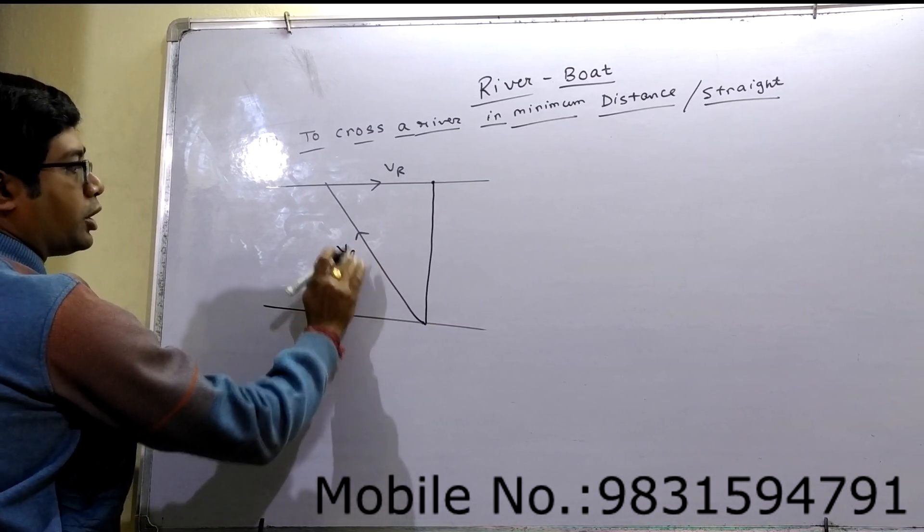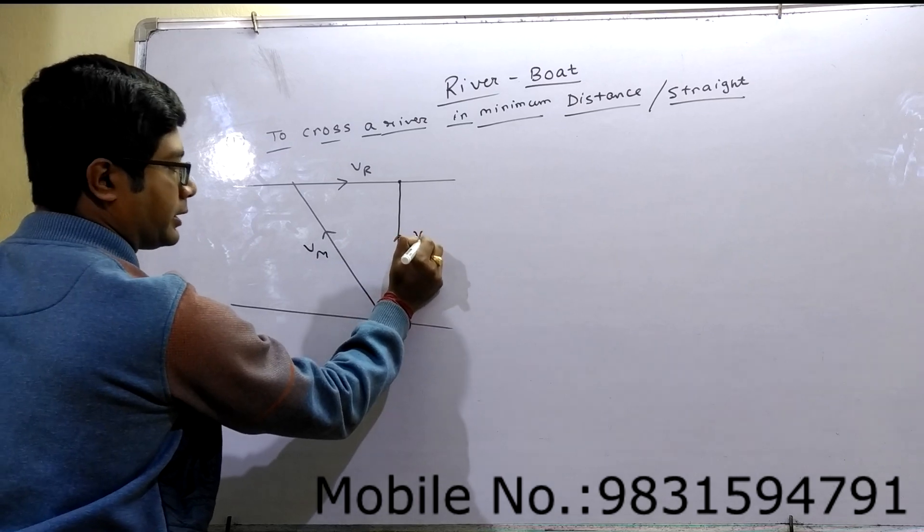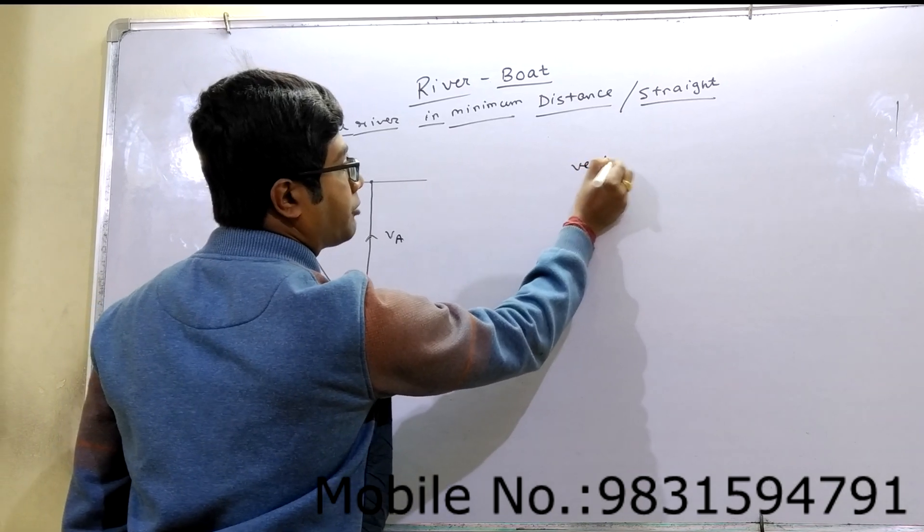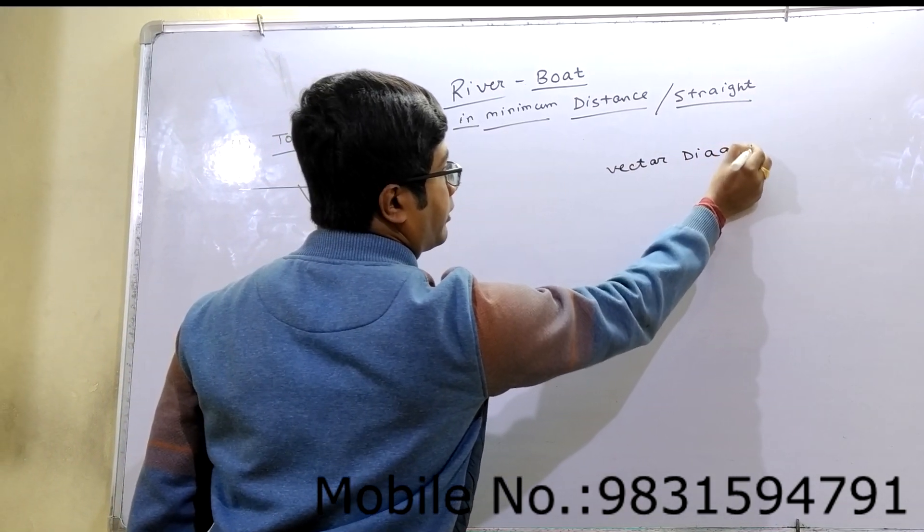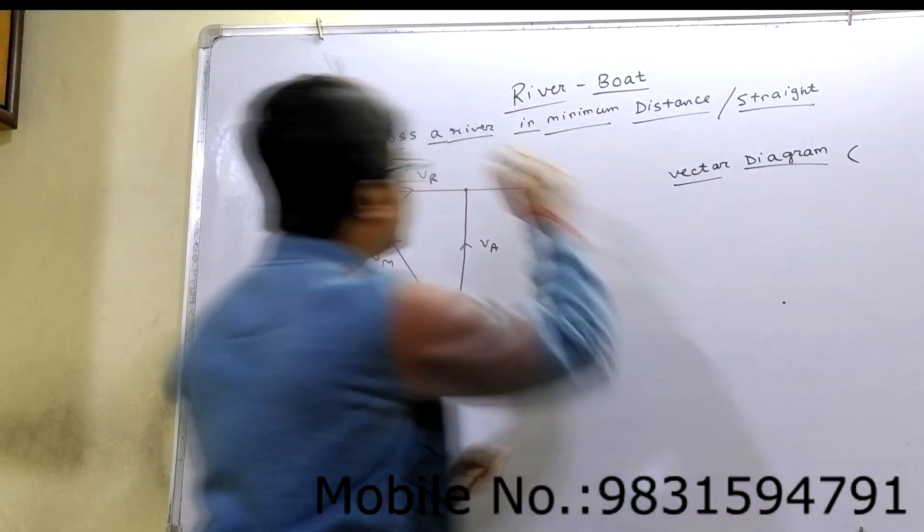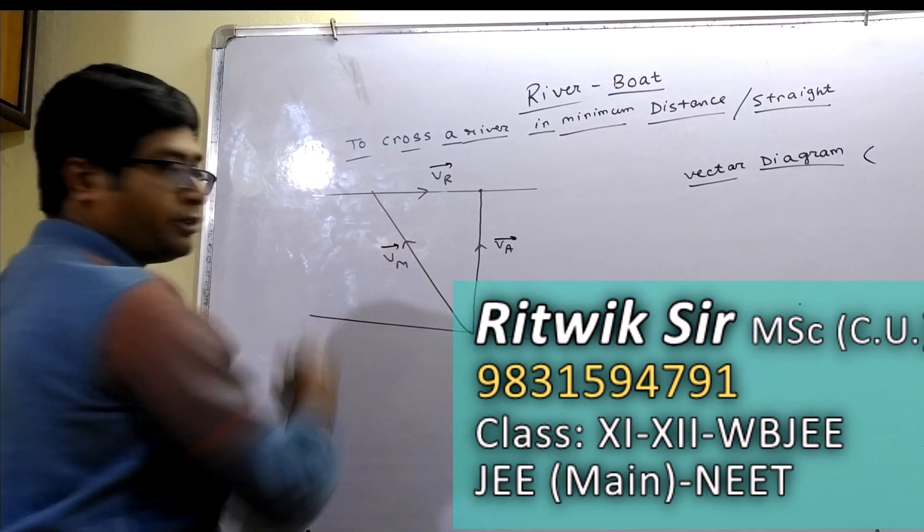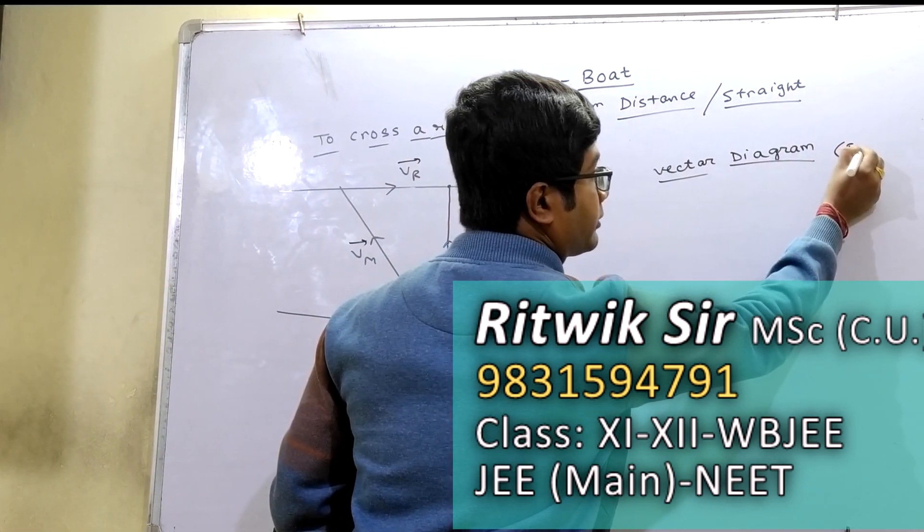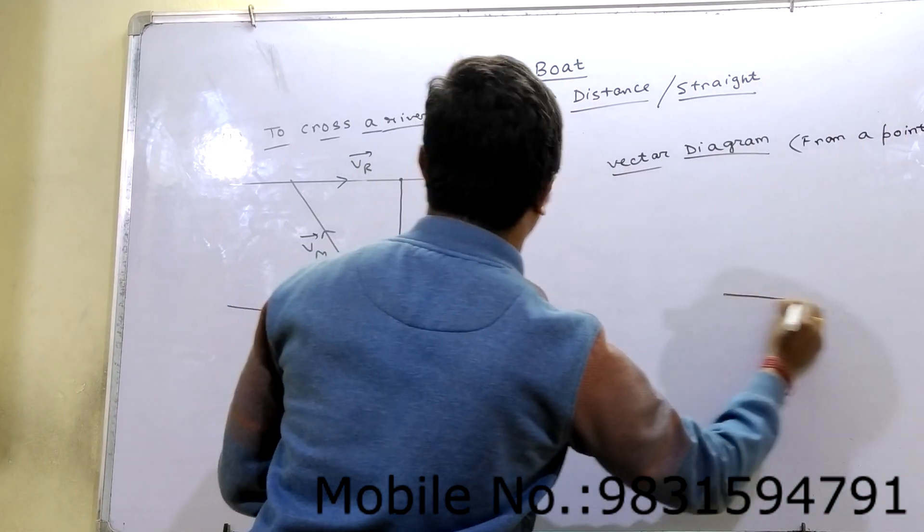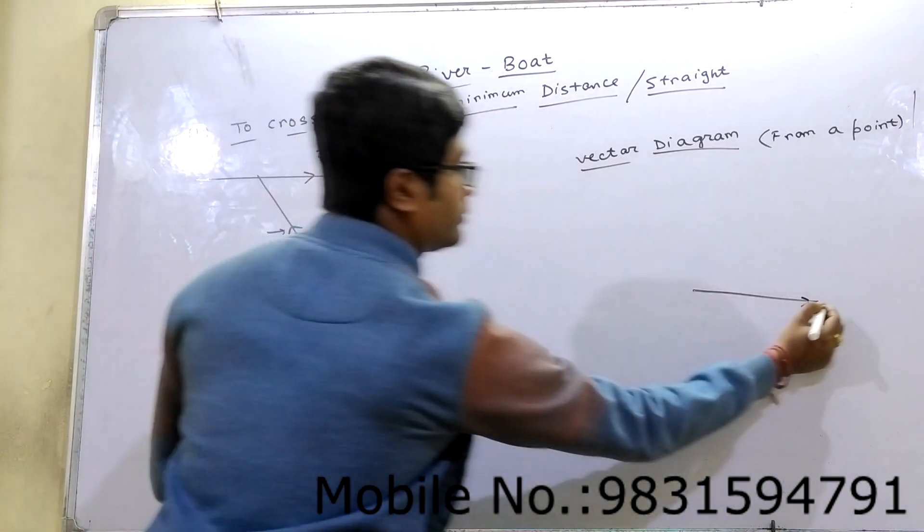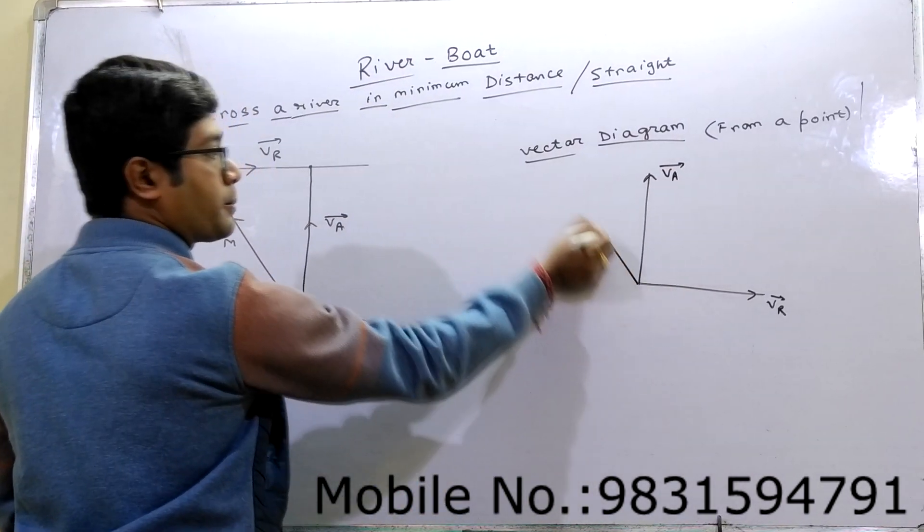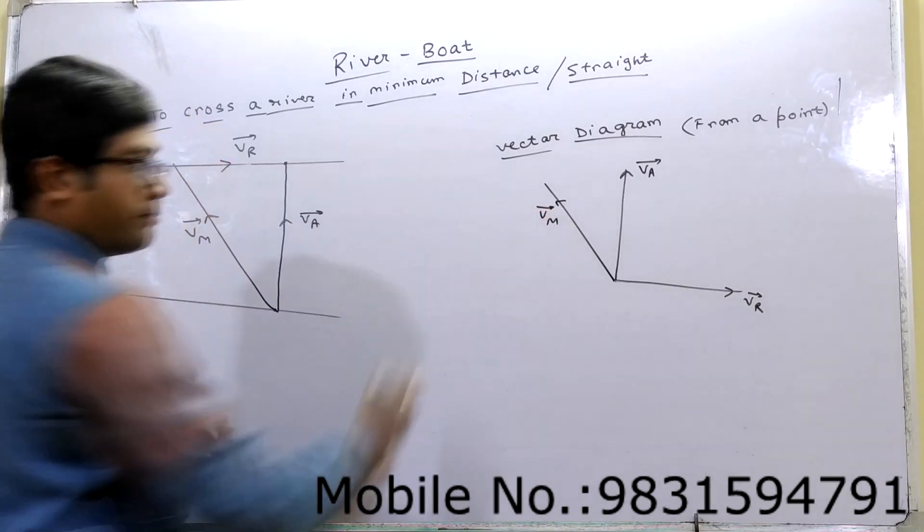This is original velocity of man or boat, anyone. And this is apparent. This is normal diagram. Now we have to draw a vector diagram. What is vector diagram? Vector diagram is all the vectors - VA, VR, and VN - all the vectors should be taken from a point.